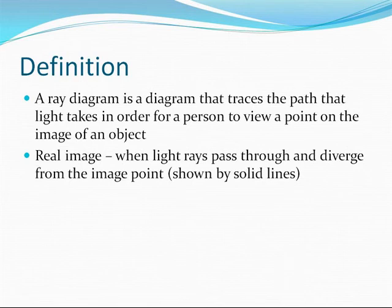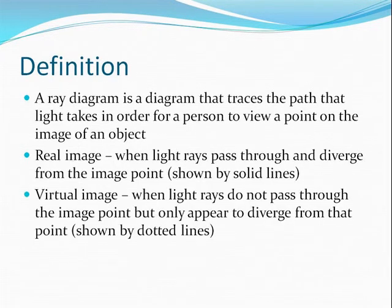A ray diagram can either show a real image when light rays pass through and diverge from the image point shown by solid lines, or a virtual image when light rays do not pass through the image point but only appear to diverge from that point shown by dotted lines.